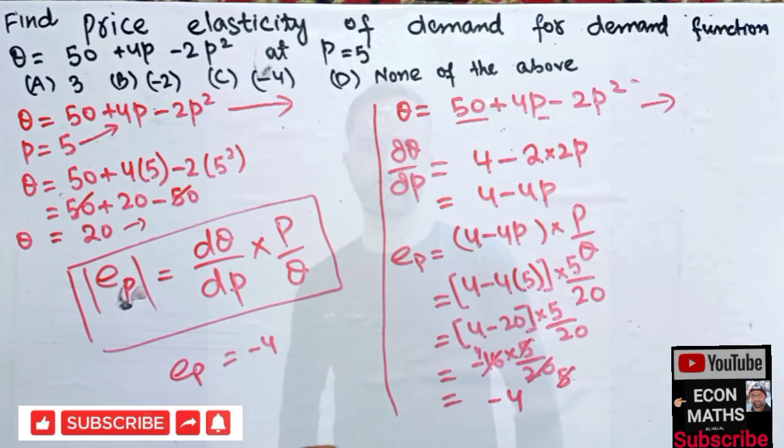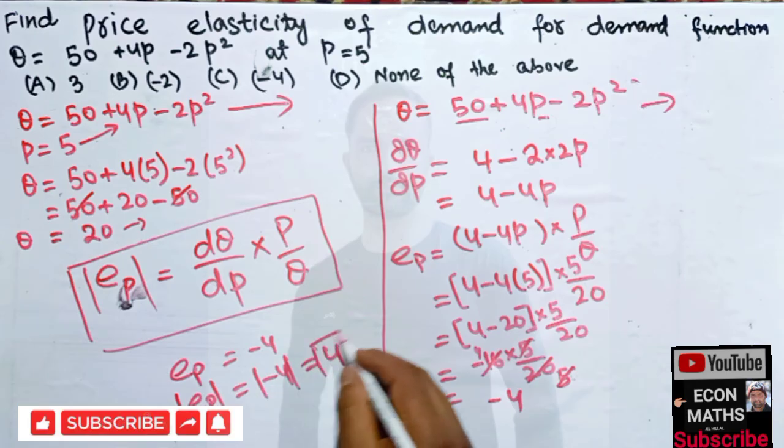So price elasticity of demand is equal to -4 but we always take the absolute value, so price elasticity of demand would be the absolute value of -4 which is equal to 4. So the correct option should be 4 here because we always take the absolute value of the price elasticity. I hope I make myself clear, thank you.